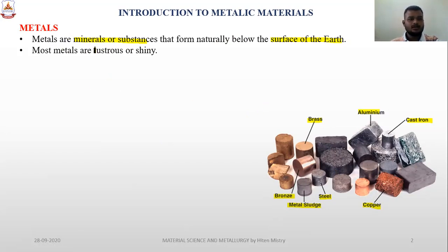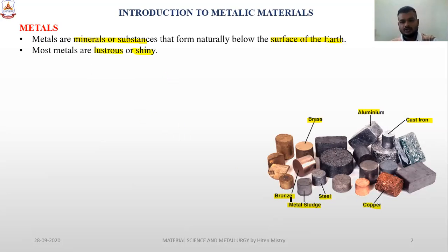Most metals are lustrous or shiny. As we can see here with bronze — looking at this bronze object, it is shinier than other materials such as cast iron and aluminium.